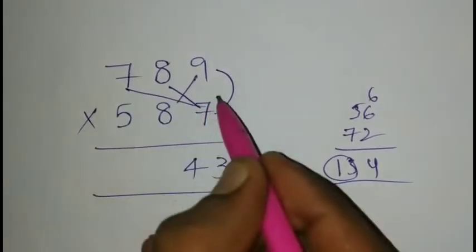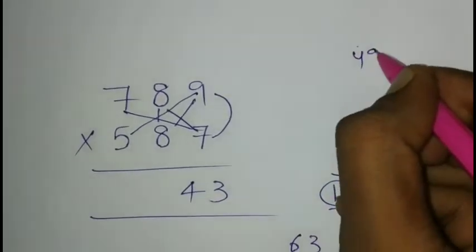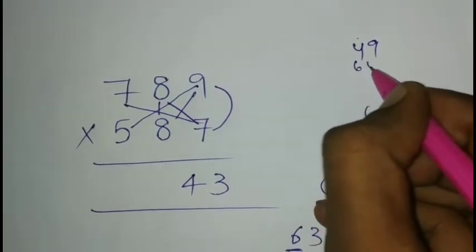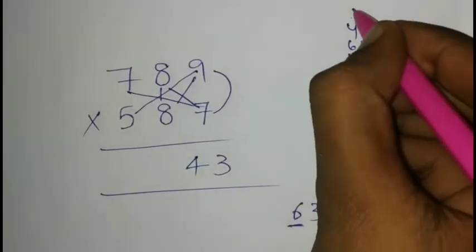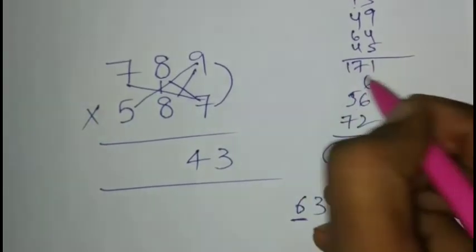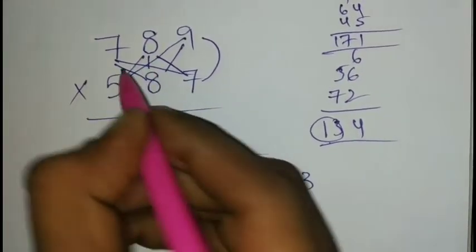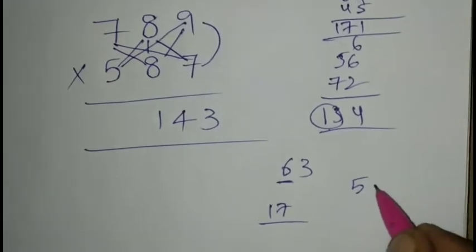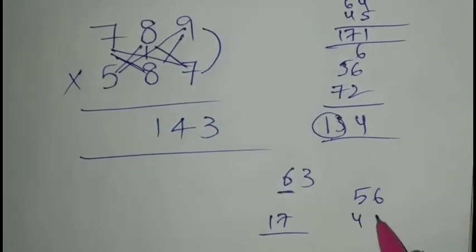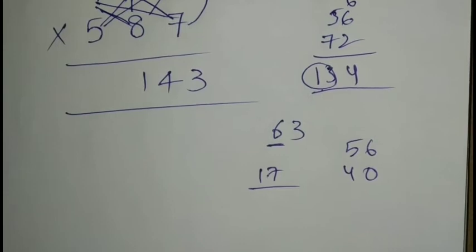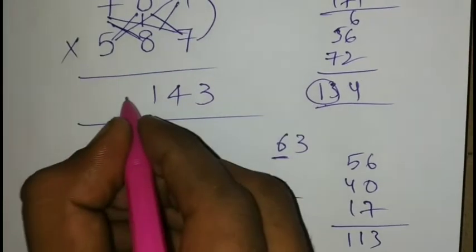Next 7 times 7, 9 times 5, 8 times 8. 7 times 7 is 49, 8 times 8 is 64, 9 times 5 is 45. 13 carry, total 171. 7 times 8, 8 times 5 with 11 carry.